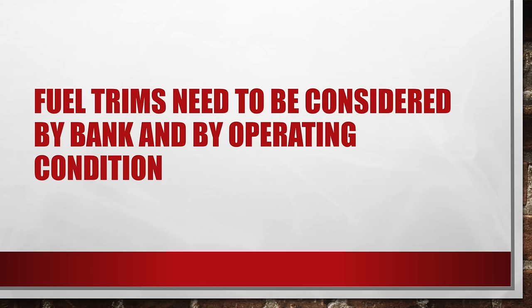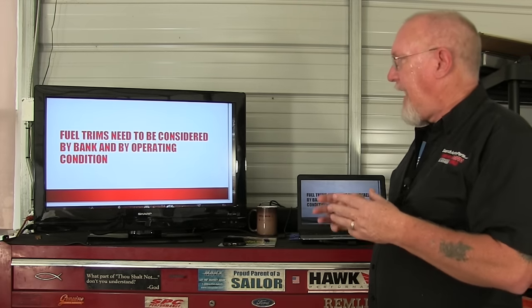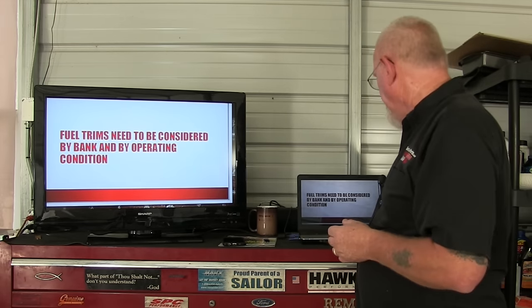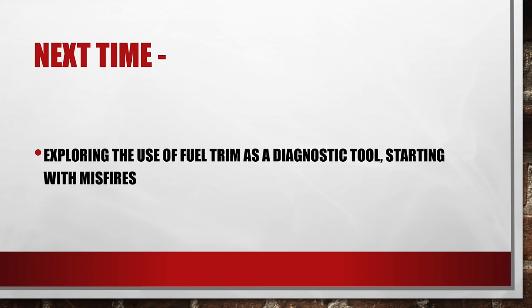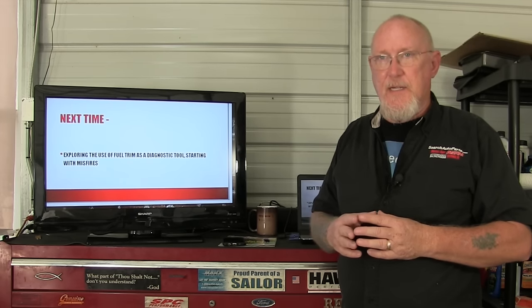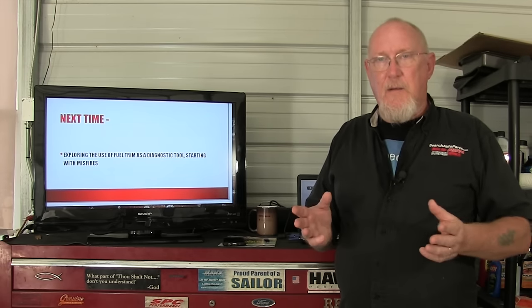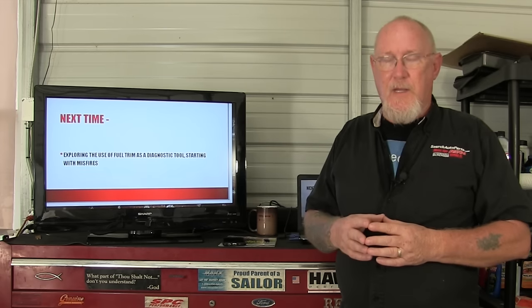Fuel trims have to be considered by bank, not by the total engine package. V6s and V8s have a left and right bank, but there are also inline four cylinders divided into two banks — typically cylinders one and four and cylinders two and three — each with their own feedback sensors. We have to look at the operating conditions occurring at the time we're looking at fuel trims; they can vary quite a bit. Next time on The Trainer, we'll look at fuel trims and the flat rate test drive, and apply that information to diagnosing misfire DTCs. I'm Pete Meyer, Motor Age Magazine — thanks for watching this edition of The Trainer, I hope you found it helpful and I'll see you next month.